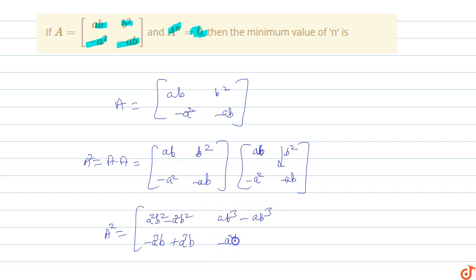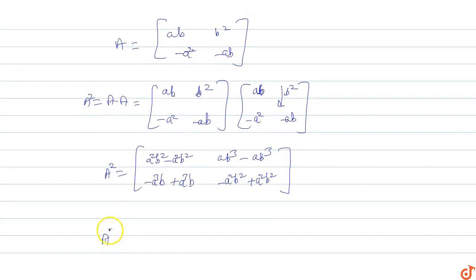The last element: -ab times -ab equals a²b², so A² matrix is [[a²b² - a²b², ab³ - ab³], [-a³b + a³b, -a²b² + a²b²]]. This equals zero.